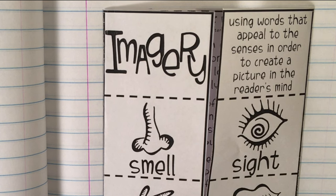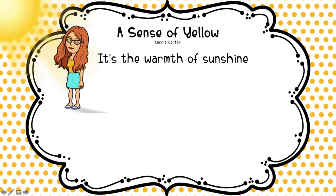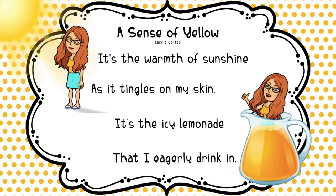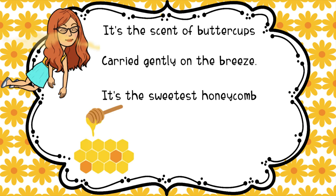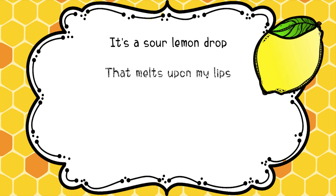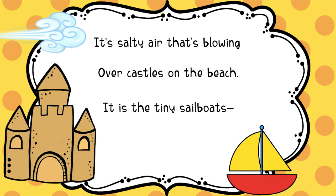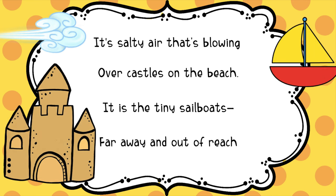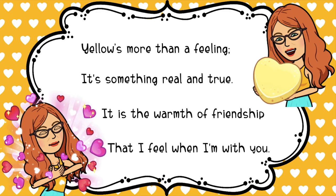Let's take a look at this poem first — we'll just read it and then look for some examples of imagery. A Sense of Yellow. It's the warmth of sunshine as it tingles on my skin. It's the icy lemonade that I eagerly drink in. It's the scent of buttercups carried gently on the breeze. It's the sweetest honeycomb and the quiet buzz of bees. It's the sour lemon drop that melts upon my lips. It's the taste of summer rain and I gulp down greedy sips. It's salty air that's blowing over castles on the beach. It is the tiny sailboats far away and out of reach. Yellow's more than a feeling — it's something real and true. It is the warmth of friendship that I feel when I'm with you.